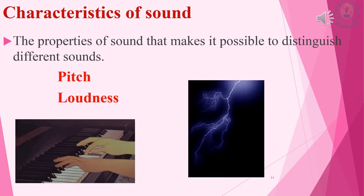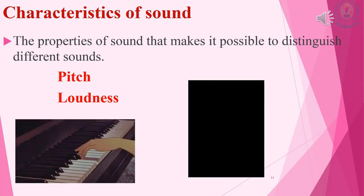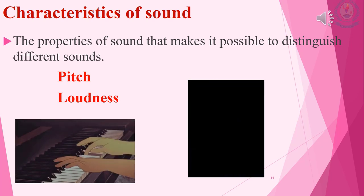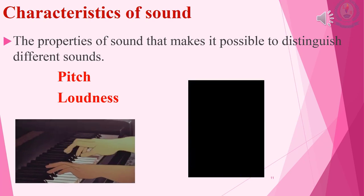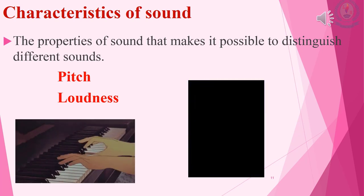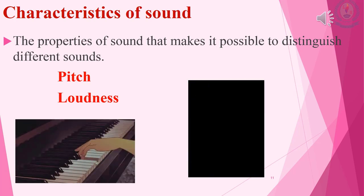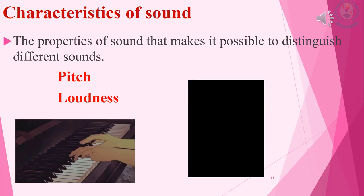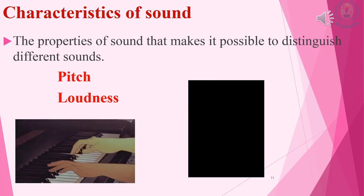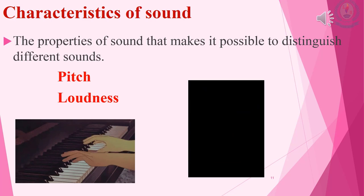Now we will study the characteristics of sounds. We can hear different types of sounds in our surroundings. The sound emitted by a piano is soft, while the sound of thunder is very loud. The characteristics are the properties of sound that make it possible to distinguish different sounds. In this lesson you will learn about pitch and loudness as characteristics of sounds.